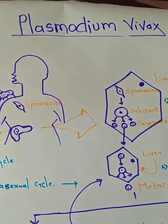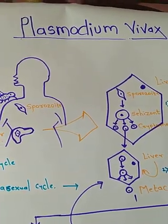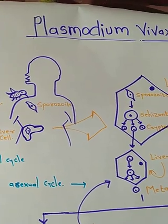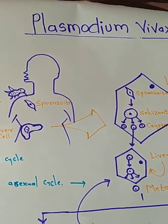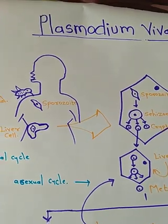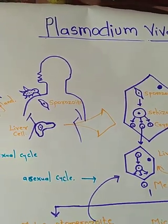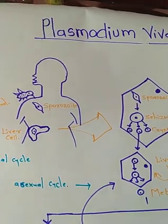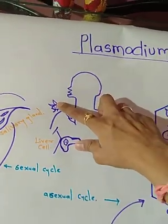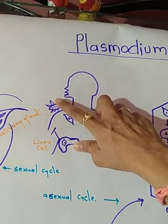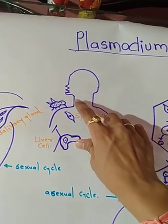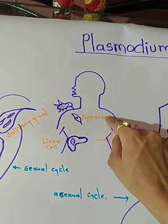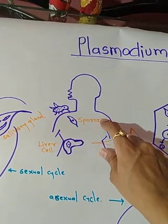Today we are talking about Plasmodium vivax, which is the parasitic protozoa that causes malaria disease in humans. Malaria is caused by Plasmodium vivax, which is carried by the vector — the female Anopheles mosquito. When the female Anopheles mosquito carrying the protozoa bites a healthy human, it first inserts the parasite into the body.